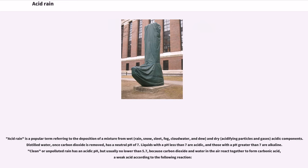Acid rain is a popular term referring to the deposition of a mixture from wet forms — rain, snow, sleet, fog, cloud water, and dew — and dry acidifying particles and gases, known as acidic components. Distilled water, once carbon dioxide is removed, has a neutral pH of 7.